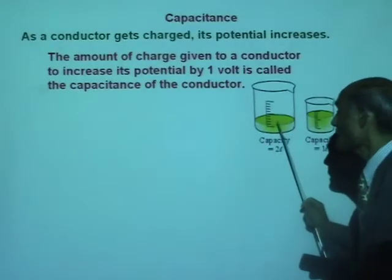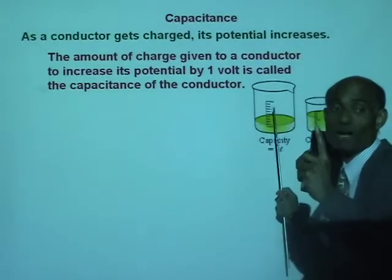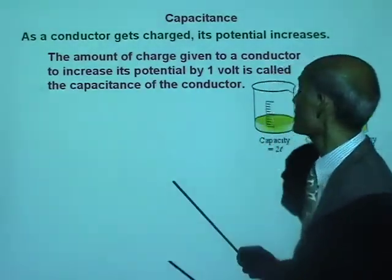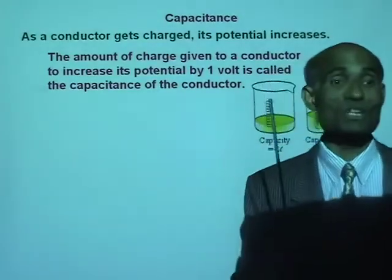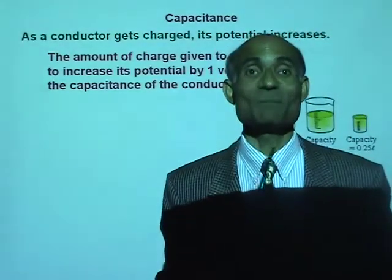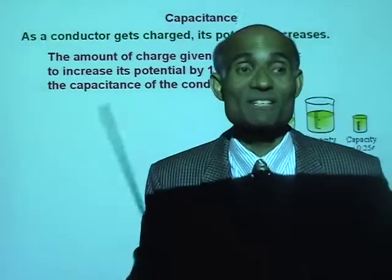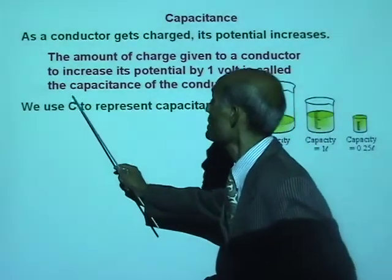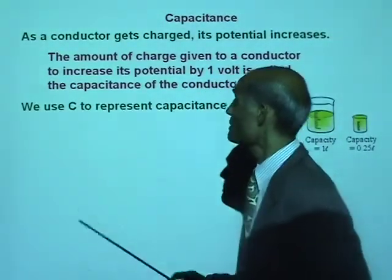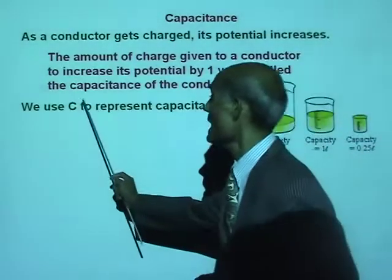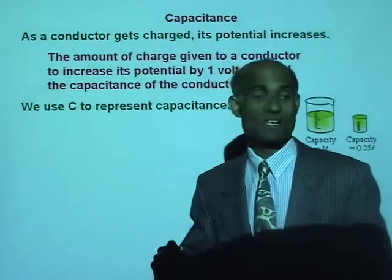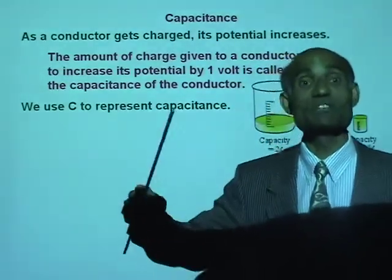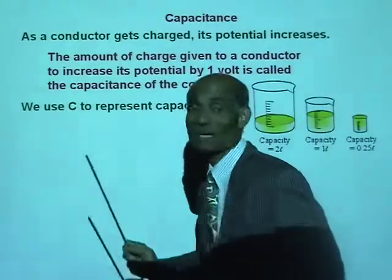Just as we define the capacity of a container by the amount of liquid needed to raise the height by 1 meter, similarly, the amount of charge given to a conductor to increase its potential by 1 volt is a measure of the capacitance of a conductor. We represent capacitance by the uppercase C. Do not confuse it with the uppercase C we use for coulombs — that is a unit, whereas this is the term capacitance.